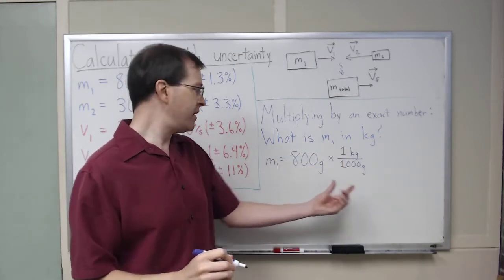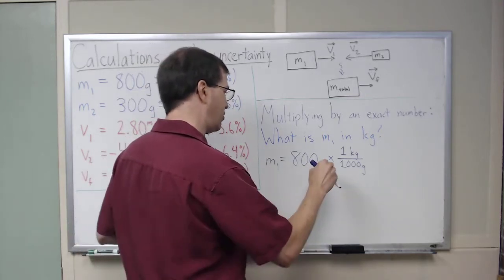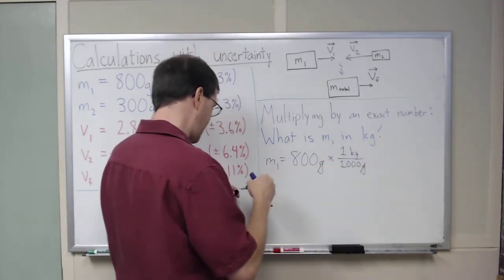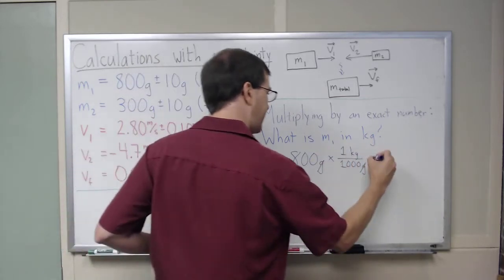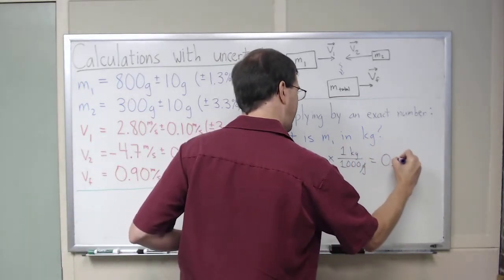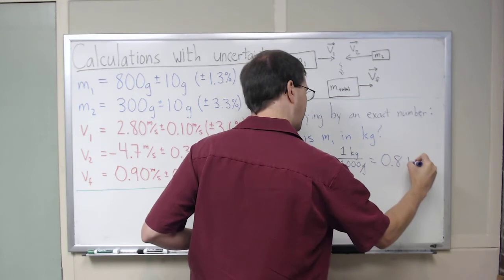And you can see then that the units cancel, grams cancels with grams, and we are left with 0.8 kilograms.